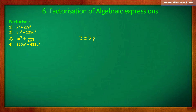Now the next example: 250p cube plus 432q cube. Now 250 and 432 are not cubes of any number. Therefore let us take 2 as a common factor: 2 into bracket (125p cube plus 216q cube).